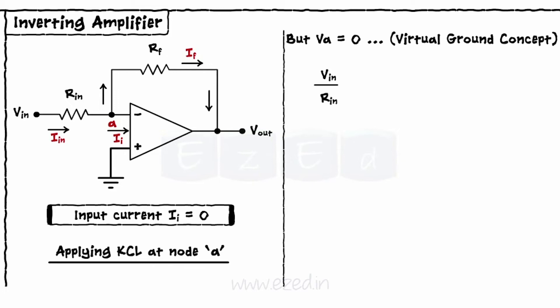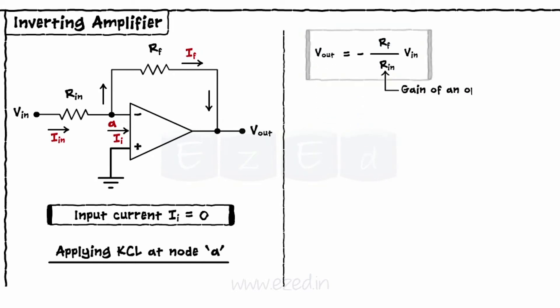Hence, the equation becomes V in upon R in equals minus V out upon R F. Thus, V out equals minus R F upon R in into V in. The ratio R F upon R in is the gain of an op amp.